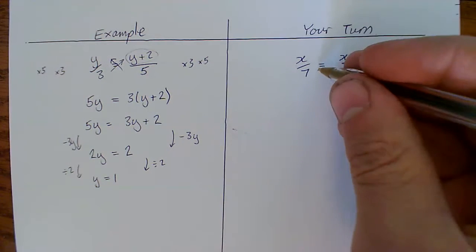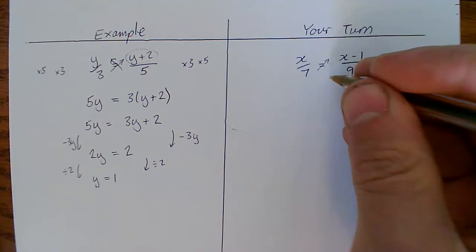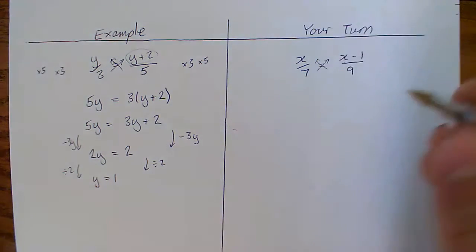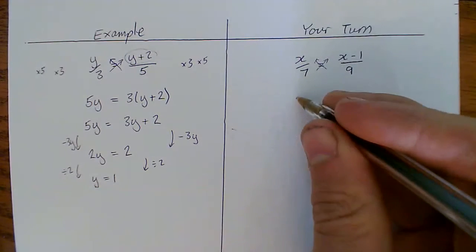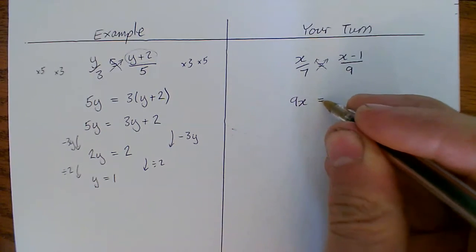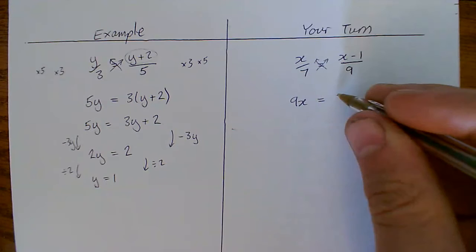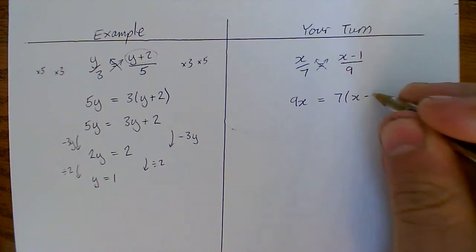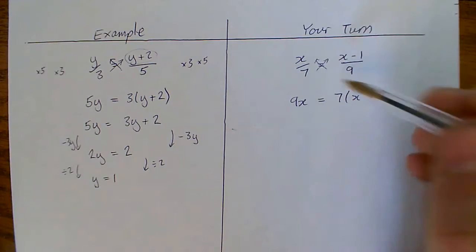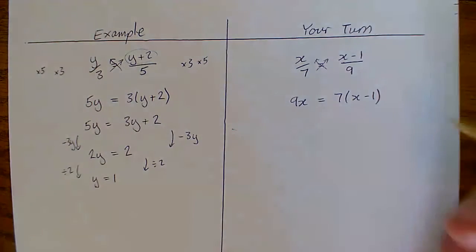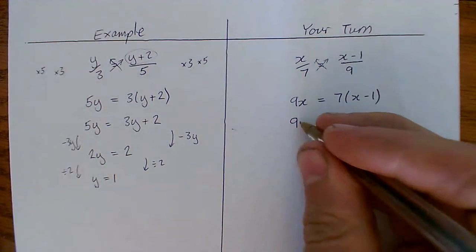Okay, so let's lay out the cross multiplying as we're doing. That times that, and that times that. So 9 times the x gives us 9x. 7 lots of that. And you'll see I put the brackets in. That's just to avoid any silly mistakes, forgetting to multiply the 1. It just keeps us right.